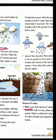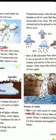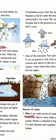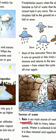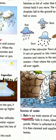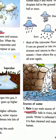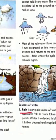Precipitation occurs when the clouds become so full of water that they are too heavy to hold it inside. The water then comes down in the form of rain, hail, or snow.